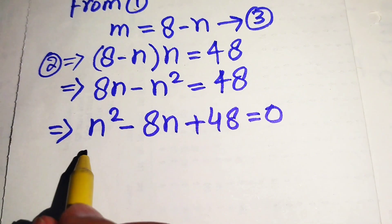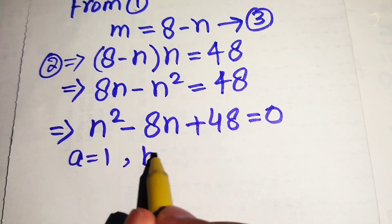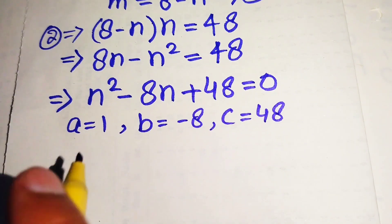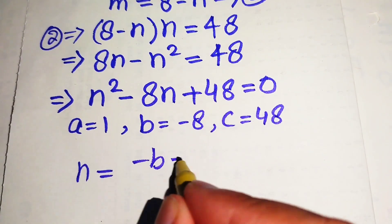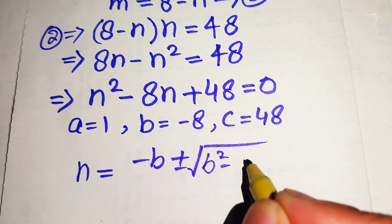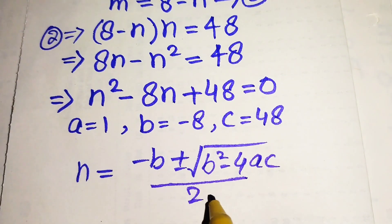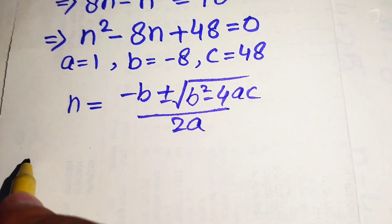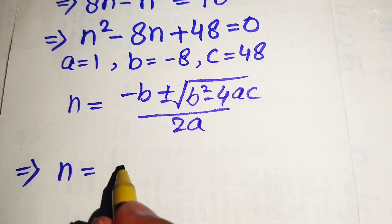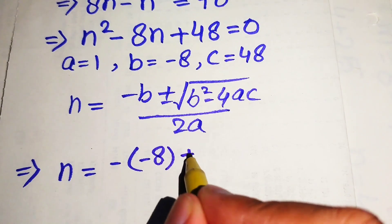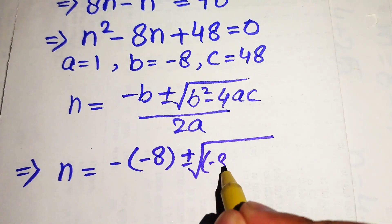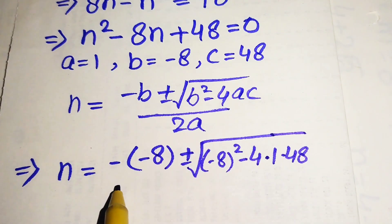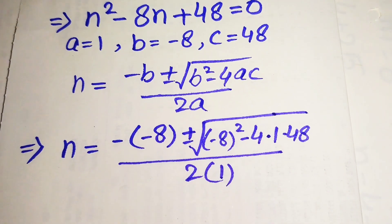We identify the coefficients: a equals 1, b equals minus 8, and c equals 48. The quadratic formula is n equals minus b plus or minus the square root of b squared minus 4ac, all divided by 2a. Substituting: n equals minus(−8) plus or minus the square root of (−8)² minus 4(1)(48), divided by 2(1).